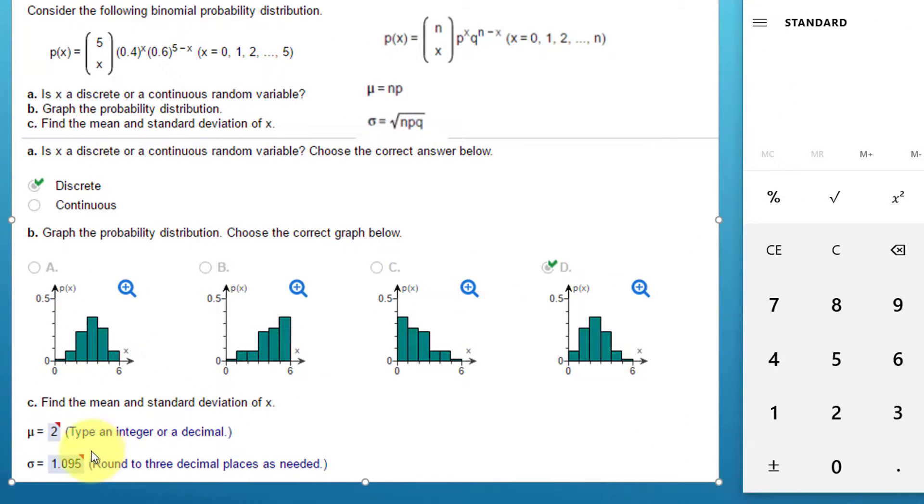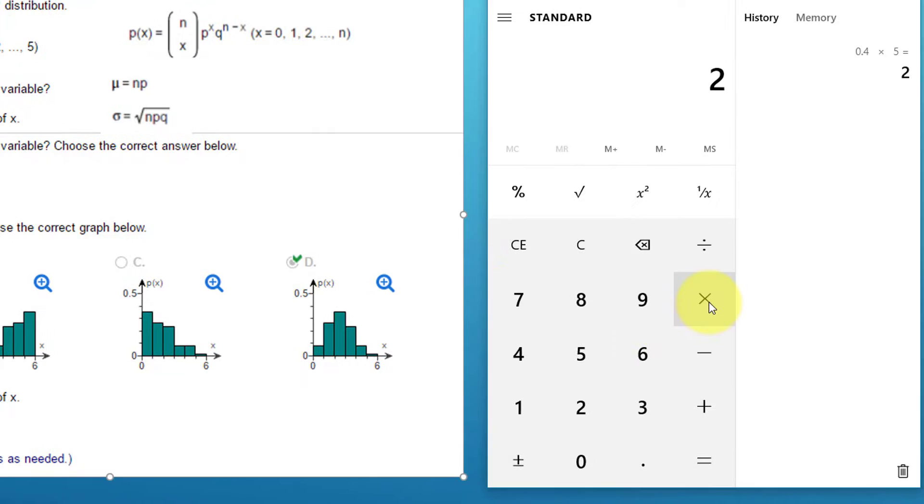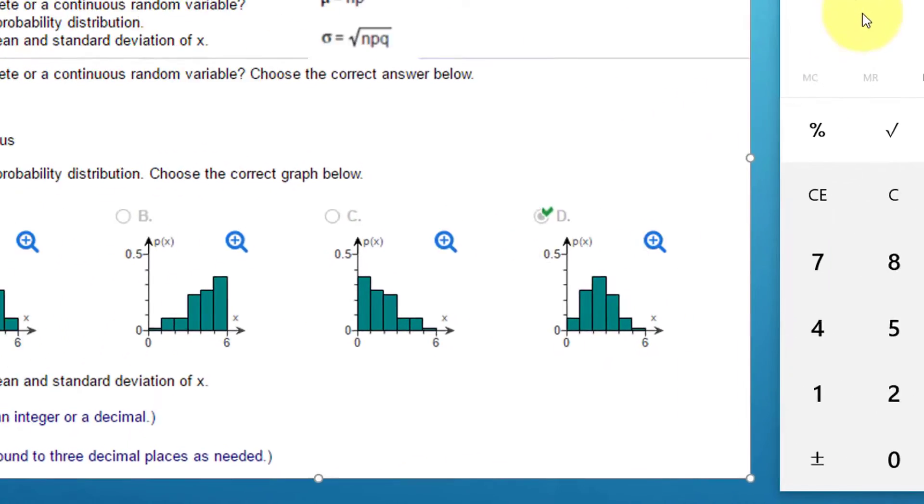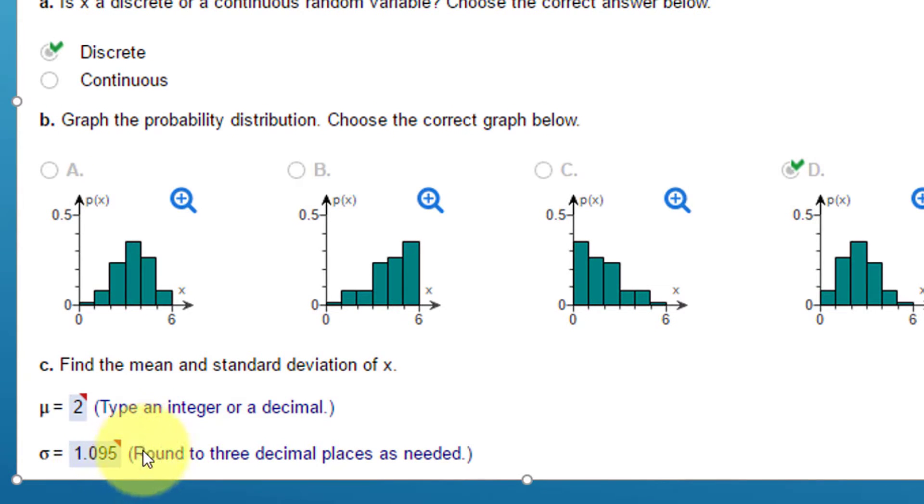The sigma is the square root of n p q. So we've got n times p. Let's just multiply that times q, which is 0.6 equals, and that gives us 1.2. Now I take the square root of that is 1.095. And that is the standard deviation.